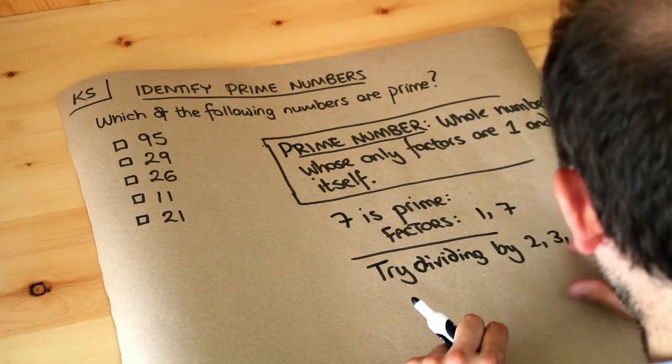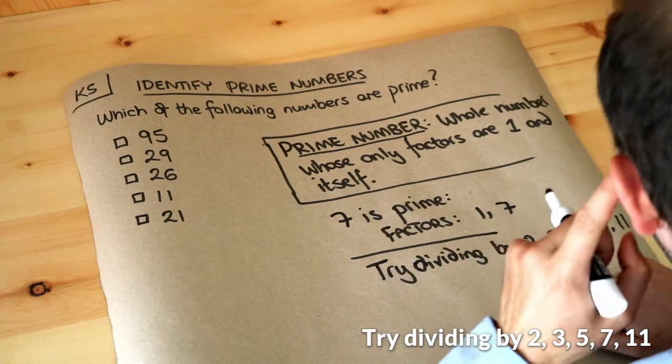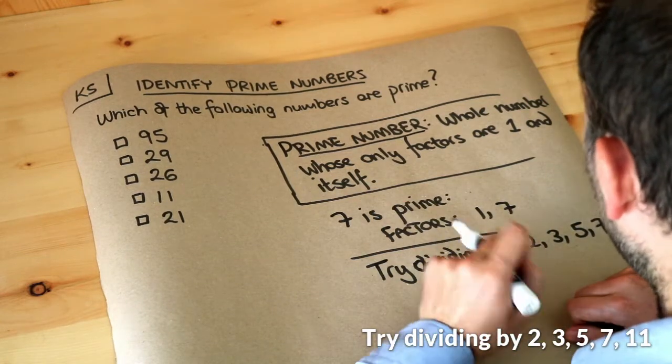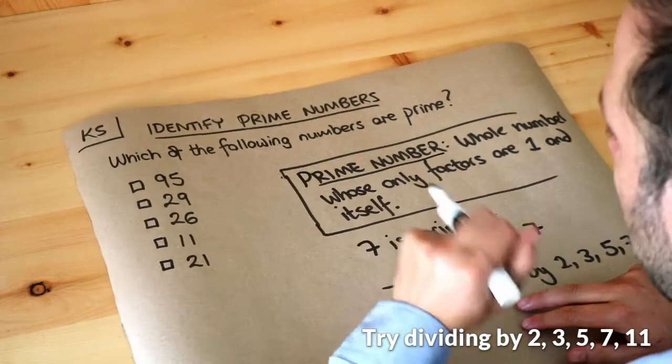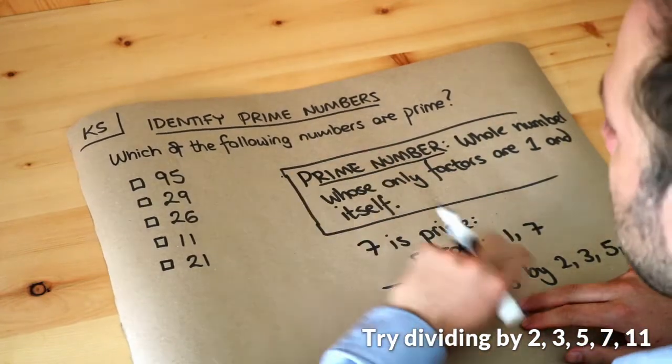If it's not divisible by any of these numbers, then it's probably prime. It might have a factor which is larger than these numbers, but it's unlikely. In fact, with large numbers it's often difficult to tell whether they're prime or not, so we're only going to deal with smaller numbers here.